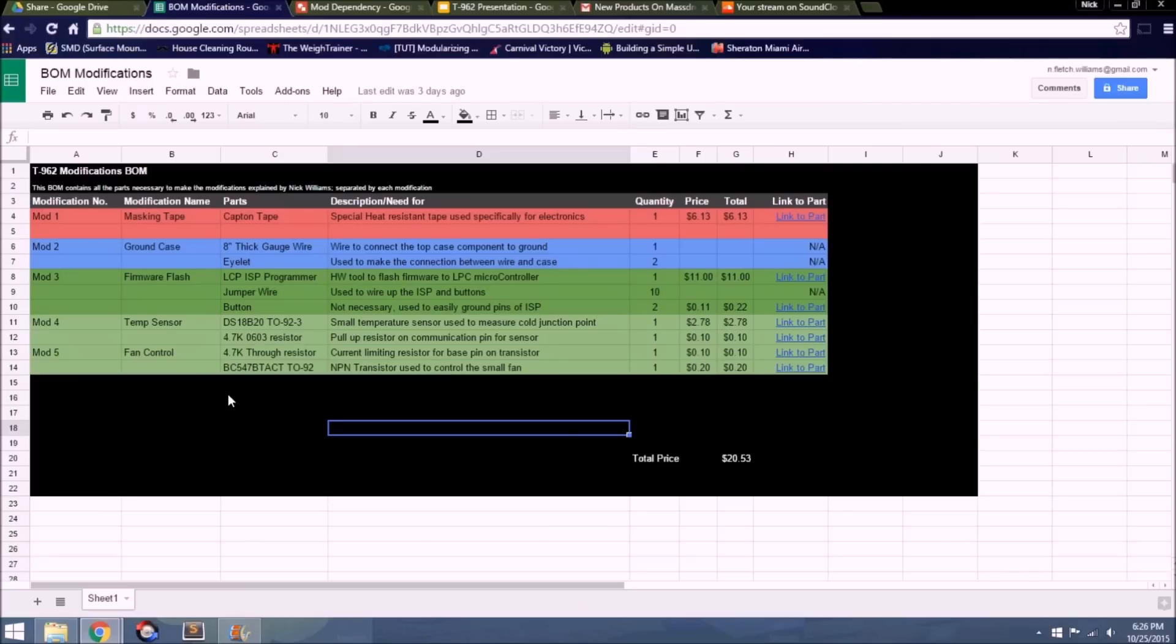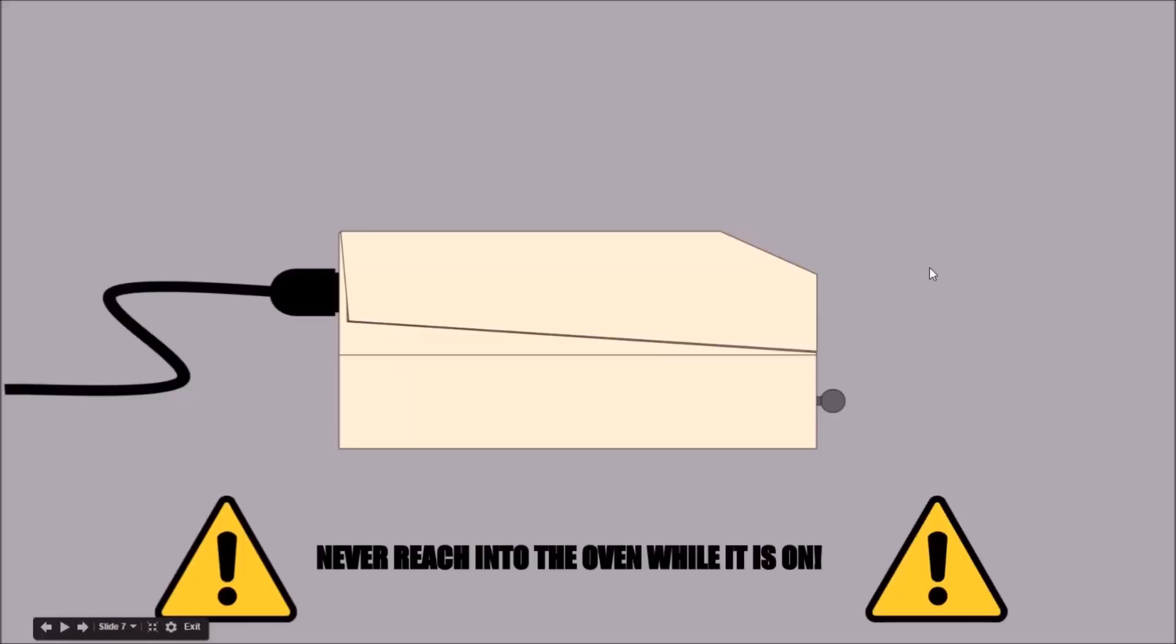For all these mods I will show you, I have a parts BOM created for each of the modifications separately. To get this modifications BOM, just simply go to the description of this video and open the shared Google Drive. There you will see a Google Sheets file that is this BOM. As a disclaimer, I must remind you that if you are to make these modifications, there will be exposed mains voltage lines and you must be very careful.